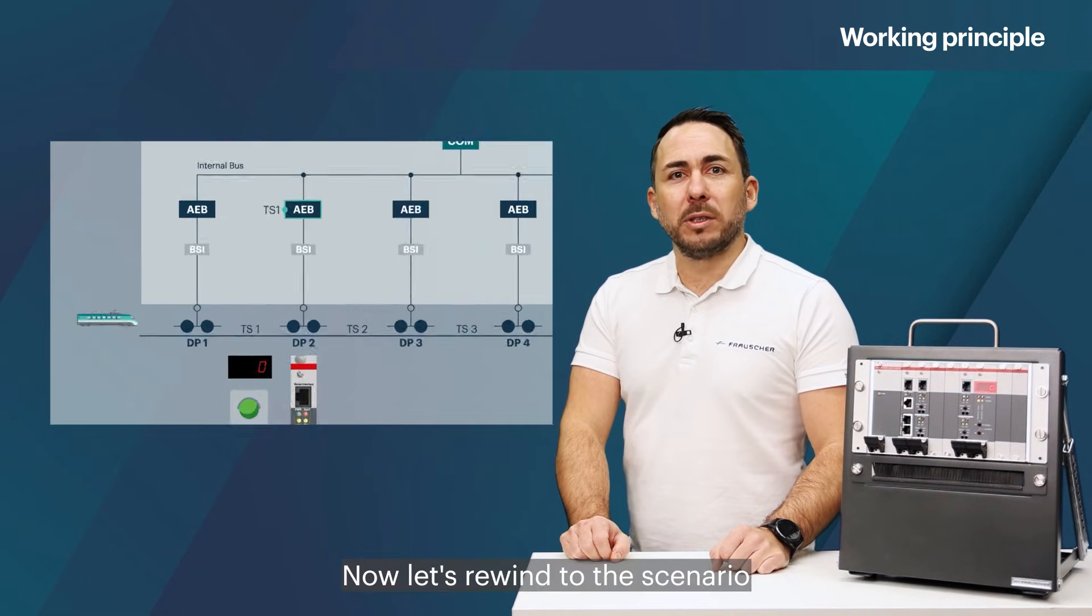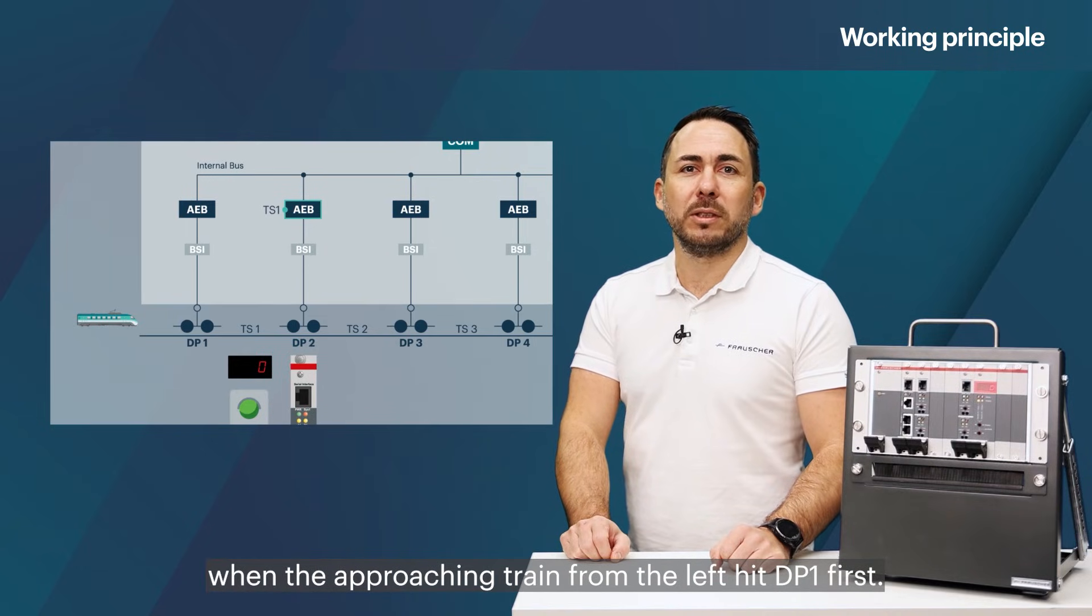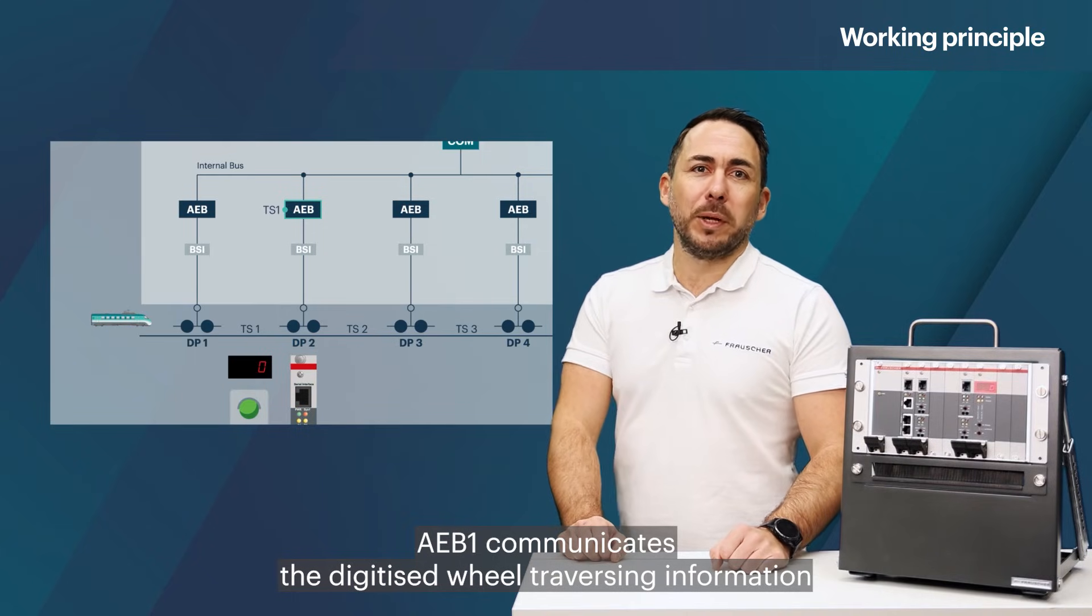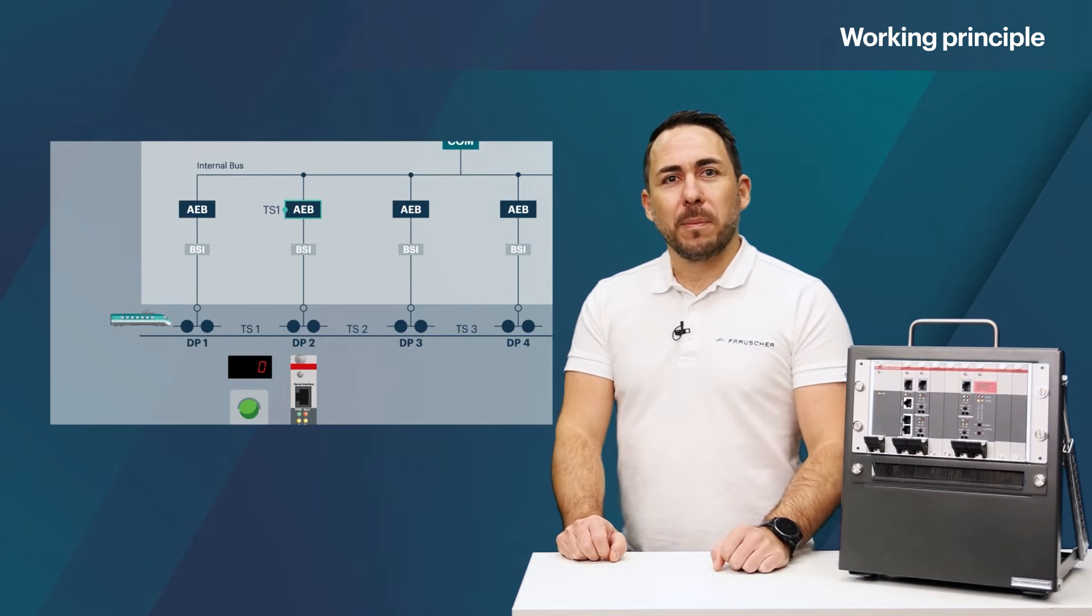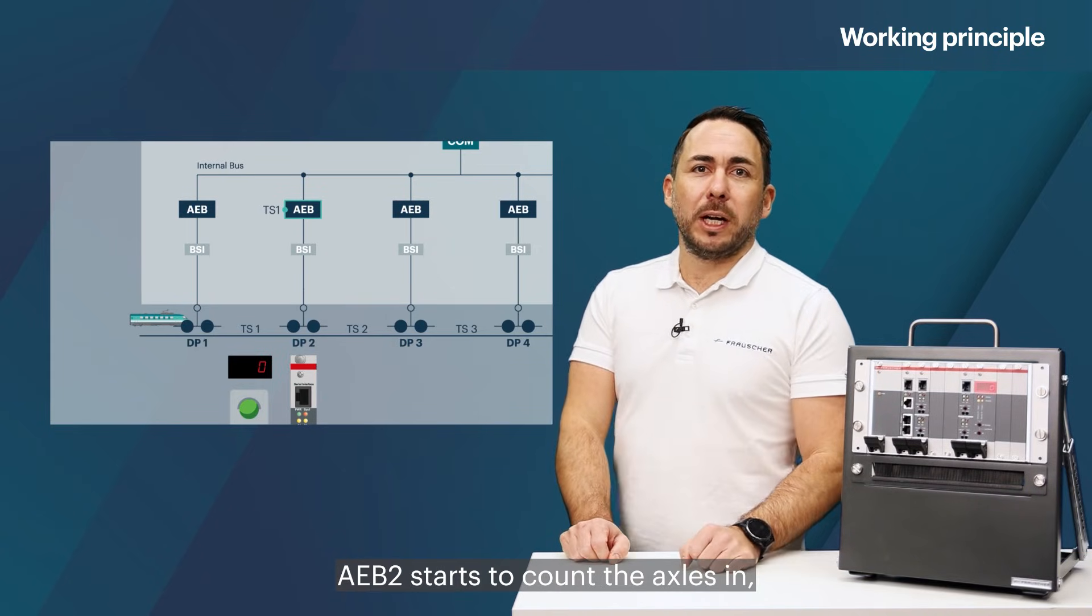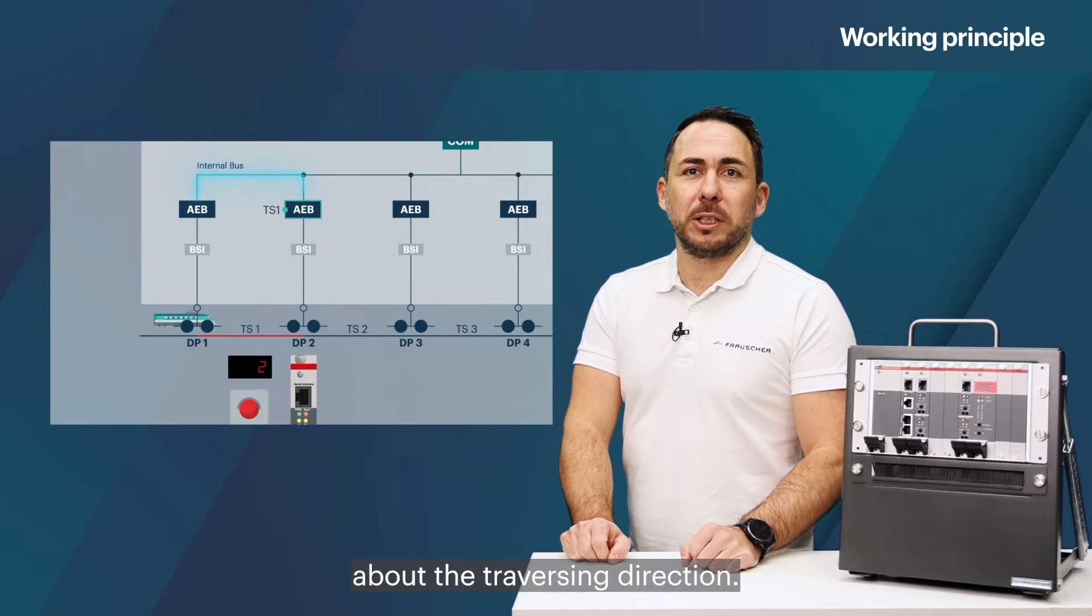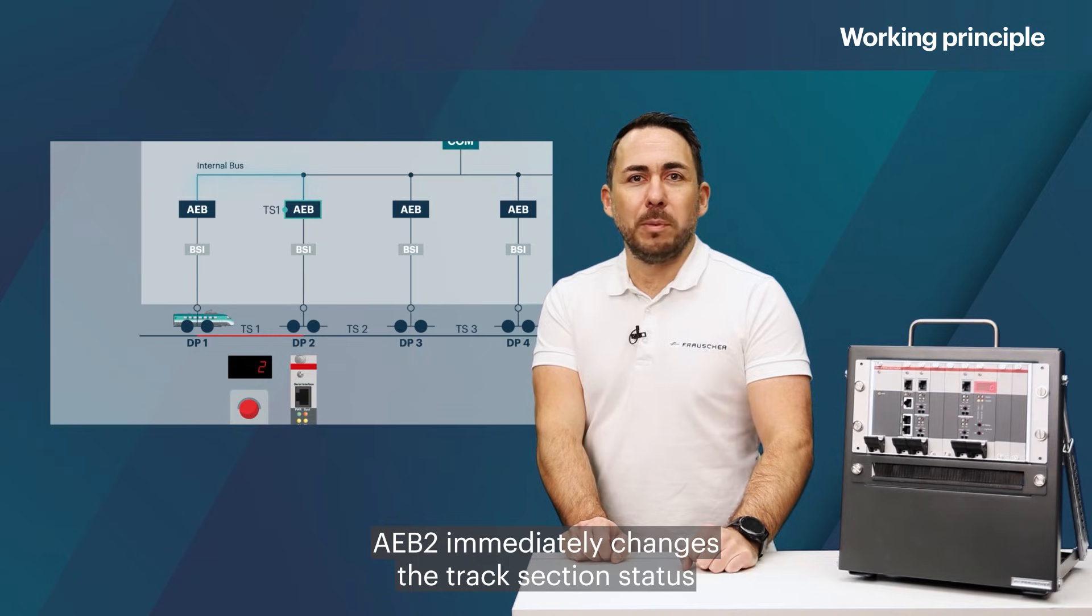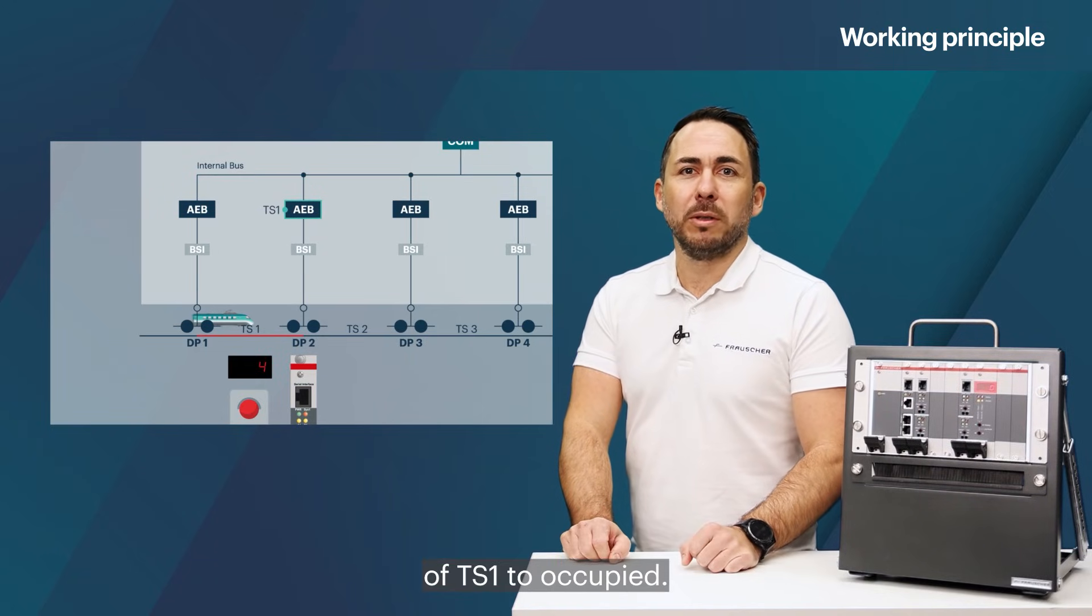Now let's rewind to the scenario when the approaching train from the left hits DP1 first. In that case, AEB1 communicates the digitized wheel traversing information to AEB2 for the axle counting. With the information from AEB1, AEB2 starts to count the axles in based on the included information about the traversing direction. At the same time, AEB2 immediately changes the track section status of TS1 to occupied.